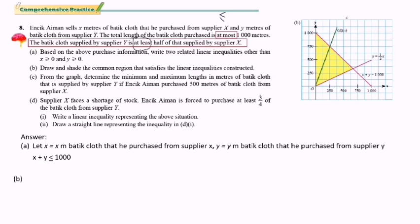The second piece of information is: the batik cloth supplied by supplier Y is at least half of that supplied by supplier X. The key word is 'at least', which means greater than or equals. So the inequality is written as Y ≥ ½X, or Y ≥ (1/2)S. Therefore, the second inequality is Y ≥ (1/2)S.